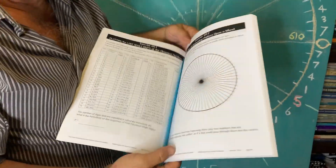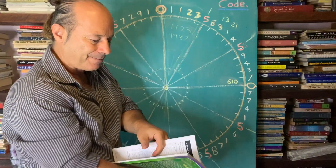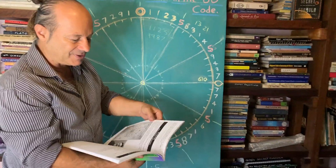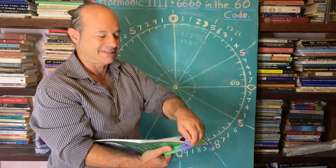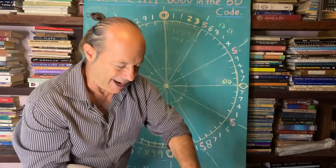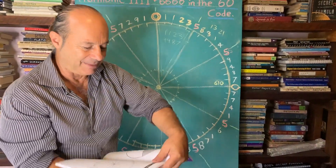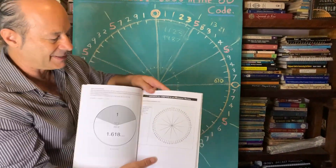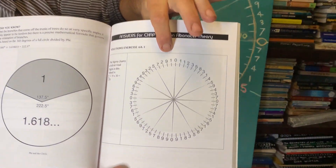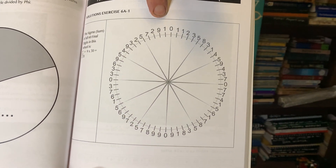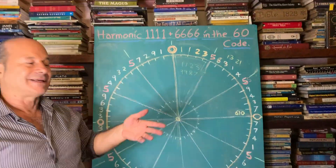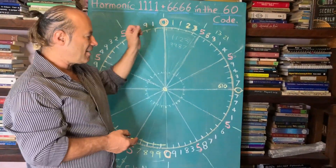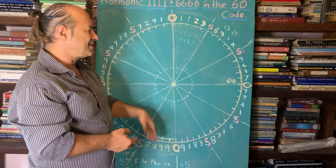This is actually a tribute to the Sumerian culture, because they gave us 60 seconds in a minute and 60 minutes in an hour. So this is the final code here that you can see. And like I said, it was from our ancestors 200 years ago who gave us the 60 code.